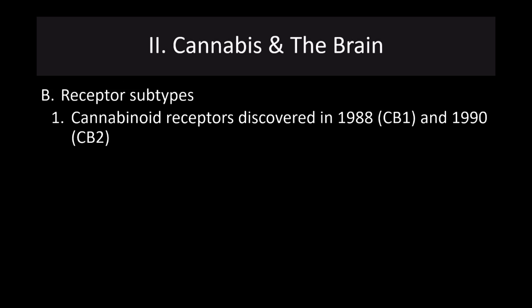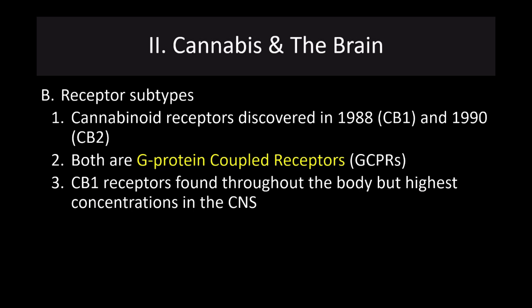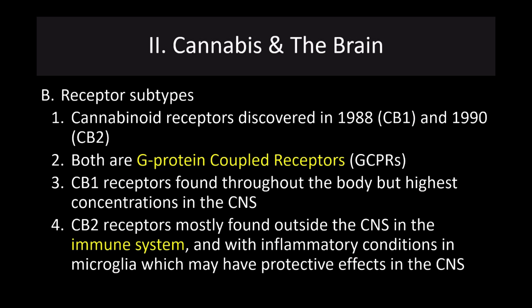There are several different receptor subtypes. The cannabinoid receptors were discovered in 1988 and 1990: CB1 and CB2. Both are G-protein coupled receptors — metabotropic receptors that influence the firing of a neuron long-term. CB1 receptors are found throughout the body, but with highest concentrations in the central nervous system. CB2 receptors are mostly found outside the CNS in the immune system, and with inflammatory conditions in the microglia, which may have protective effects in the CNS. This is where we get interest in how cannabinoids might influence inflammation, and where cannabidiol appears to exert some of its beneficial effects.